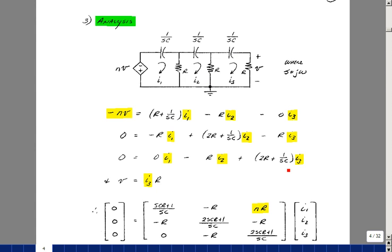And then around mesh 3, I've got two resistors and one capacitor, and the impedance of that is 1 over SC. So that's going to go on row 3, column 3. Between meshes 3 and 2, there's a resistor R, so we'll subtract that. Nothing between mesh 3 and mesh 1.